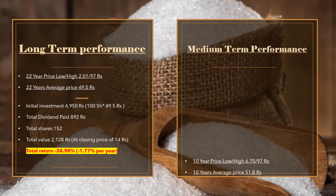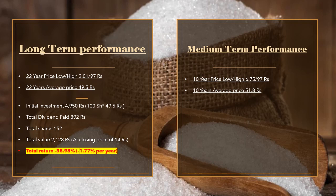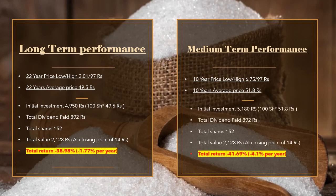Isi tarah agar medium term performance ki taraf dekhe to 10 saal ke arse mein company ka share price low 6.75 rupees aur share price high 97 rupees per share raha hai. Average share price is arse mein 51.80 rupees per share. Is average share price per 100 shares mein initial investment 5,180 rupees cost ki hai. Cash dividend company ne apne shareholders ko is arse mein 892 rupees pay ki hai aur total number of shares 100 se badh kar 152 ho gayi hai. Last day closing price 14 rupees per share per current investment value 2,128 rupees hai. Overall in sarse mein 41.69 percent ka loss hai aur year on year 4.10 percent ka negative return hai shareholders ke liye unki initial investment per.